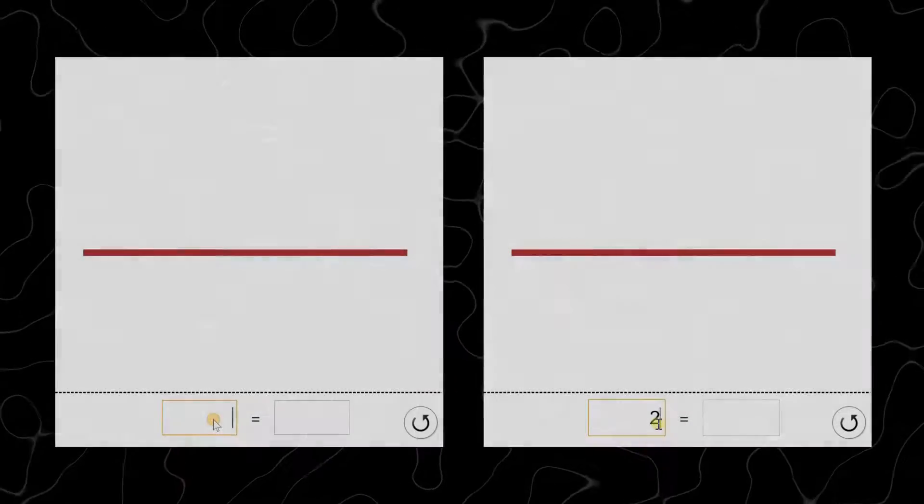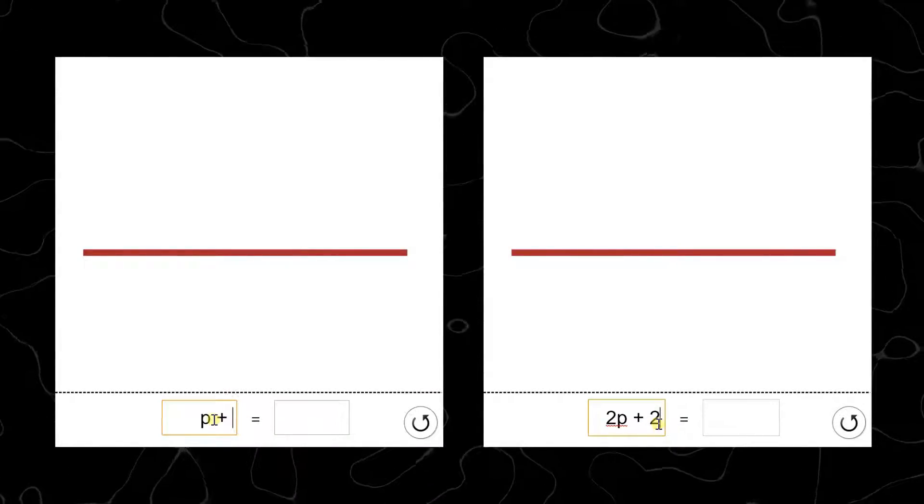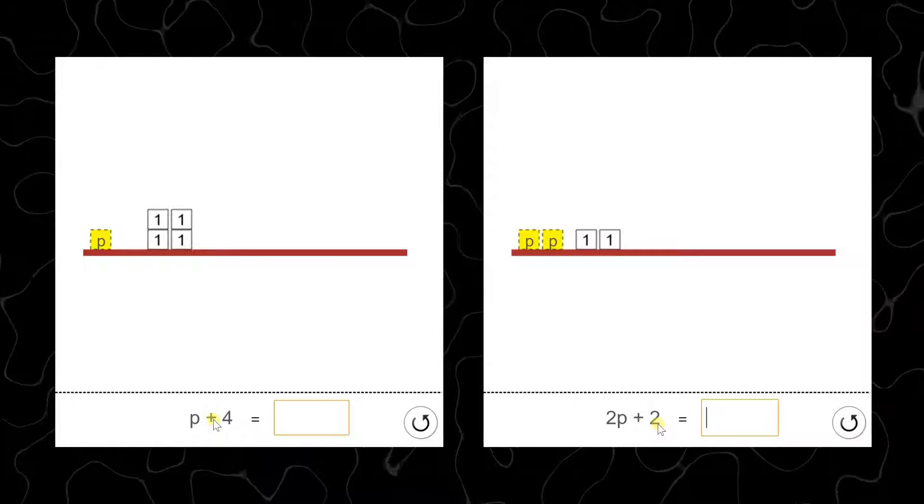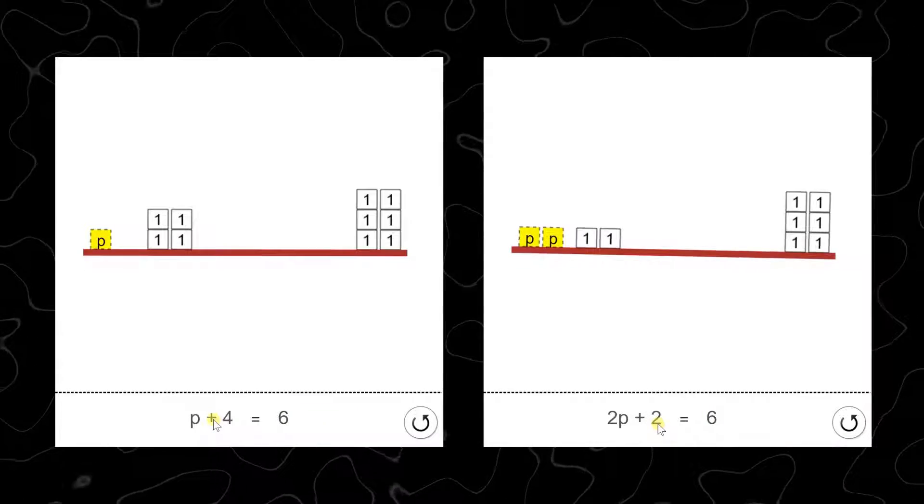Take a look at these two equations: 2p plus 2 equals 6, and p plus 4 equals 6. Notice anything interesting?